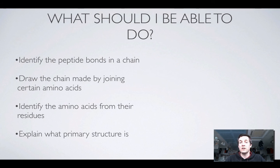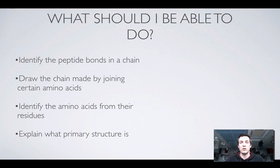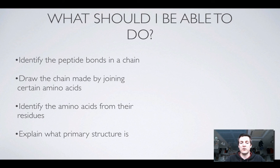So now, if you're asking yourself what you should be able to do when it comes to primary structure — well, if I showed you a length of a peptide chain or a polypeptide, you ought to be able to spot the peptide bonds in it. That's important because if you were to break it down, you could see what amino acids it was made out of. You could also join amino acids together to make a chain, which is like the reverse problem. Rather than seeing what amino acids are in a chain, you can make the chain from the amino acids. Remember, we call the amino acids in the chain the residues, so identifying them from their residues means just looking at the chain and seeing what amino acids there were.